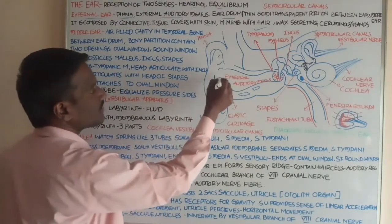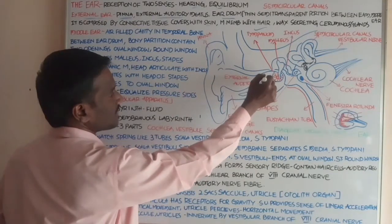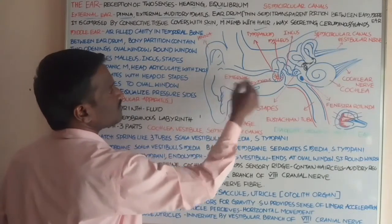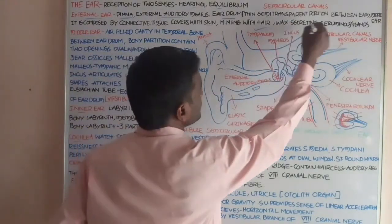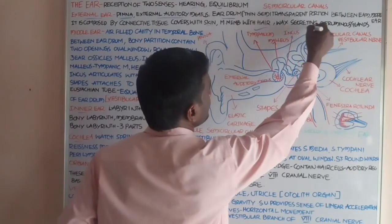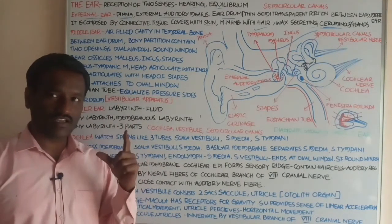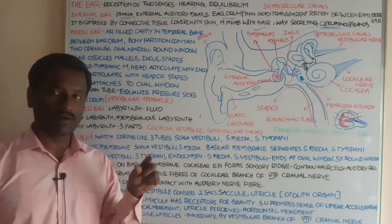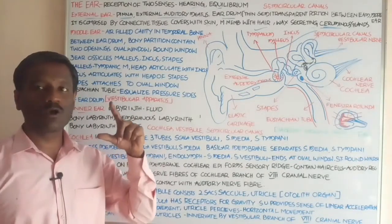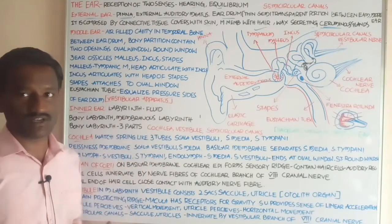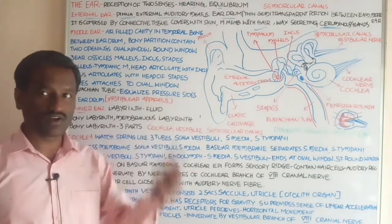The entire external ear — pinna and external auditory meatus, which is a curved tube-like arrangement — is covered with air and also has wax-secreting sebaceous glands called ceruminous glands, which secrete cerumen. This arrangement prevents the entry of dust particles into the ear.